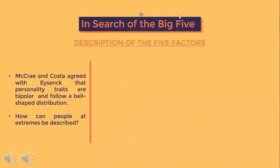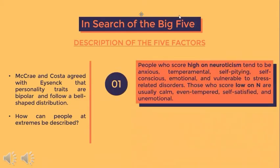McCrae and Costa agreed with Eysenck that personality traits are bipolar and follow a bell-shaped distribution. Neuroticism represents the degree to which a person experiences the world as distressing, threatening, and unsafe — ranging between perfect emotional stability and complete emotional chaos. People who score high on neuroticism tend to be anxious, temperamental, self-pitying, self-conscious, emotional, and vulnerable to stress-related disorders. Those who score low are usually calm, even-tempered, self-satisfied, and unemotional.